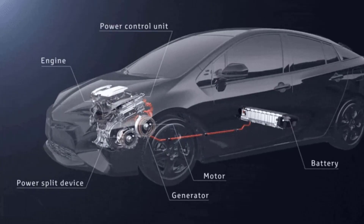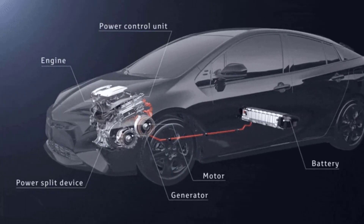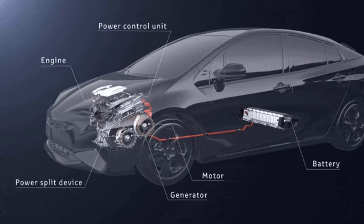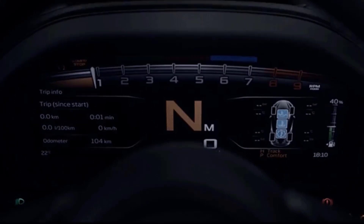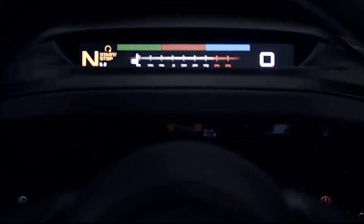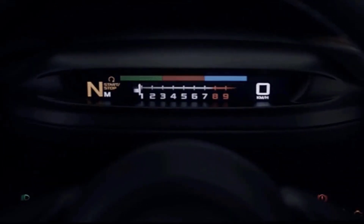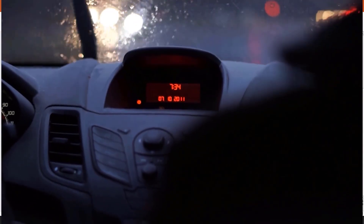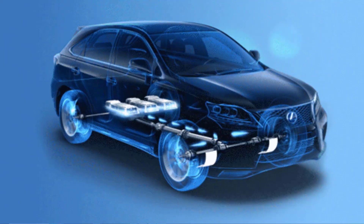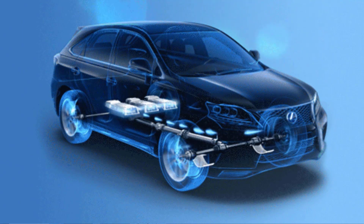This is the beauty of CAN bus — it enables seamless communication between components like engine control units, sensors, and even your car's dashboard. When you see a warning light on your car dashboard, it's because a relevant component sent a message via CAN bus to inform you about a specific issue in the car.